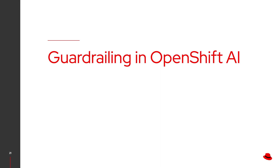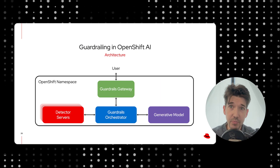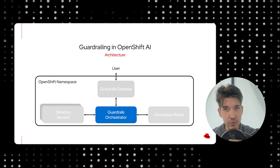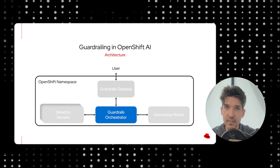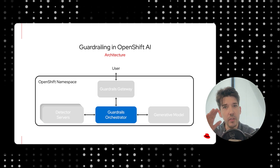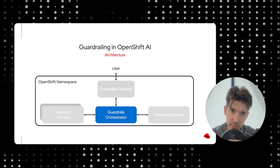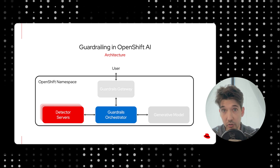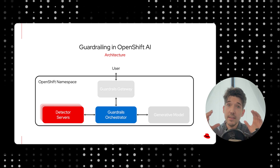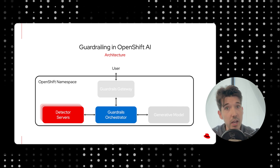So let's take a look at what guardrailing looks like inside of OpenShift AI. There are three main components. First is the guardrails orchestrator — this handles the network routing, the network requests inbound from users, and then sends them out to the detector servers and the generative model as needed. It handles that flow. Next, we have the detector servers — these are contained microservices for those individual detection algorithms.